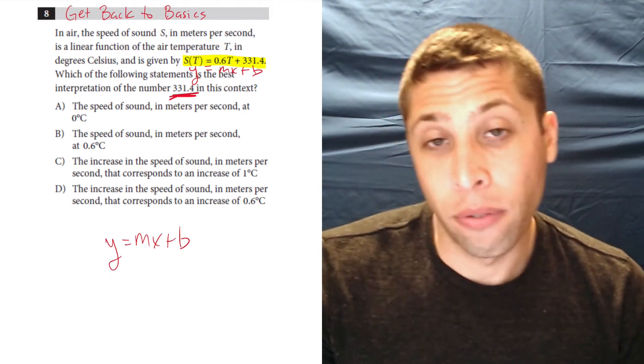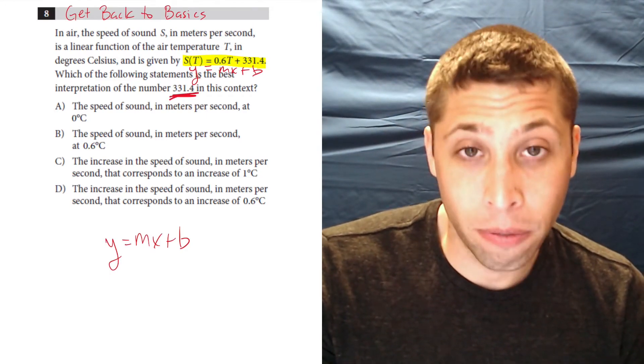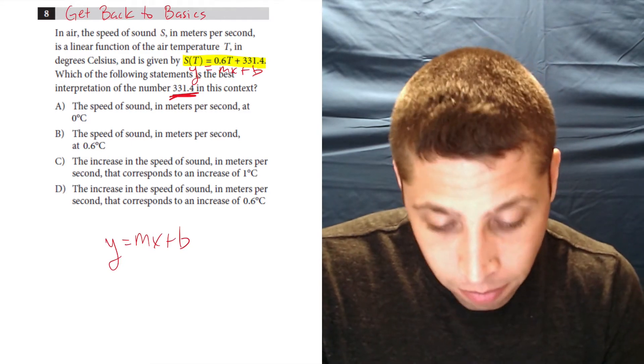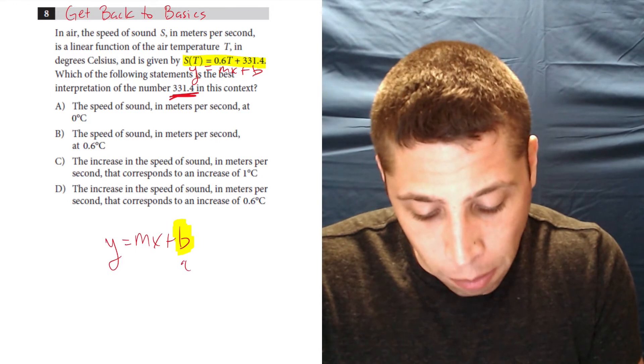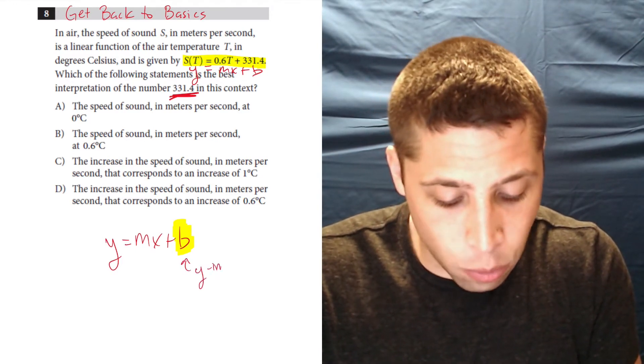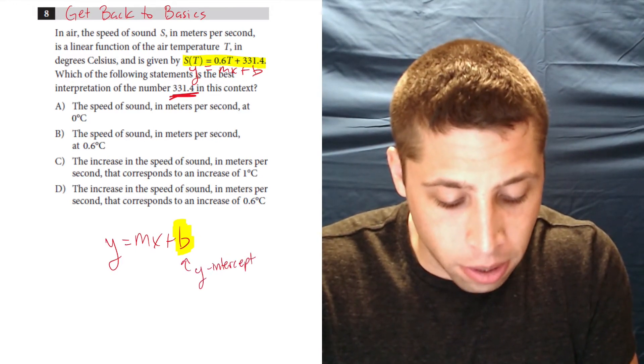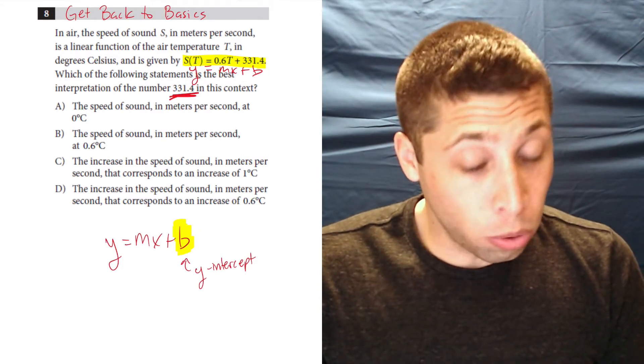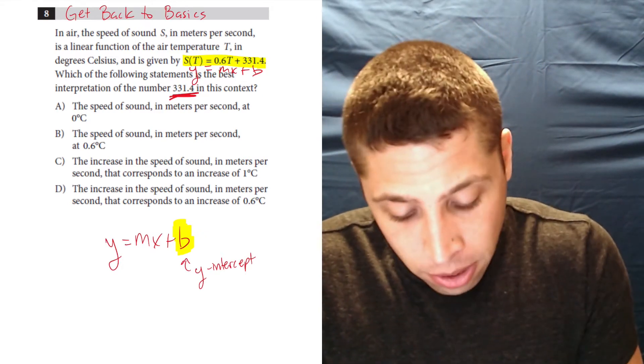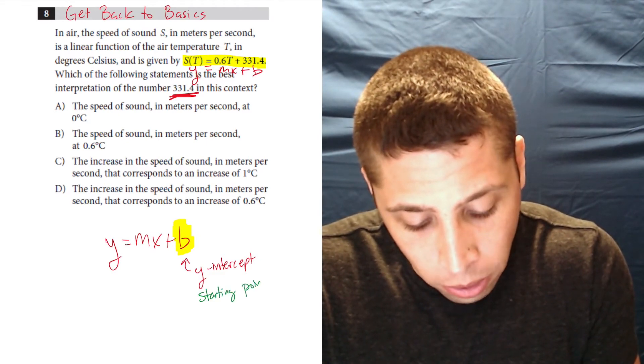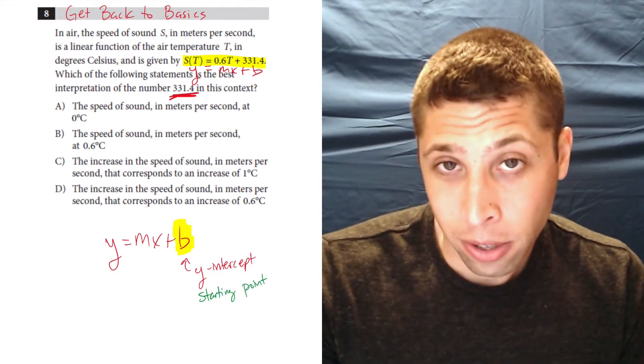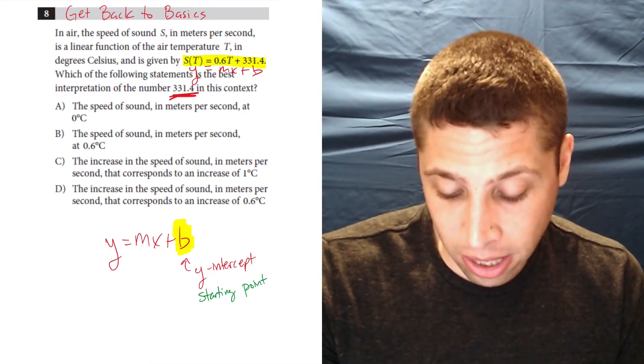So they're asking for 331.4, which is right here, and that is our b term. So what does the b term represent in a line? It is the y-intercept. And in a story, a y-intercept sounds a lot like a starting point or an initial value. So we're looking for those kinds of key words.